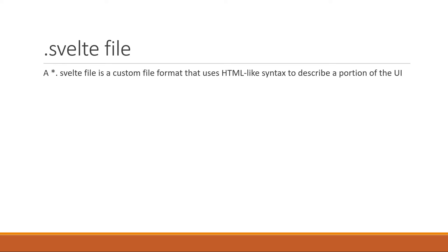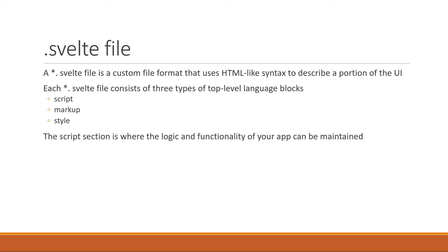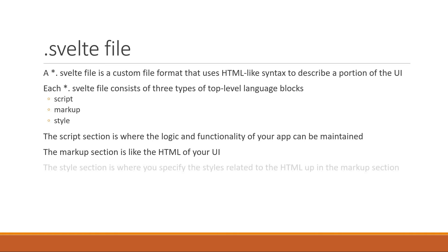Next, let's understand the code that goes inside a .svelte file. Each .svelte file consists of three sections: script, markup, and style. The script section is where the data and the logic for the markup is maintained. You could say it is like the JavaScript of your UI. The markup section is the HTML of your UI — it defines the structure. The last section is the styles section, where you specify the styles related to the HTML written in the markup section.